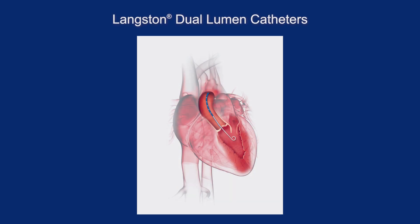The Langston catheter is the only device designed for simultaneous pressure measurements to accurately calculate the aortic pressure gradient and the valve effective orifice area. The Langston catheter's 2-in-1 coaxial lumen design assists clinicians to measure pressure in an accurate and efficient manner.